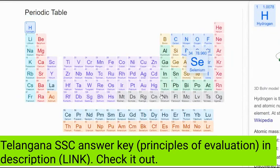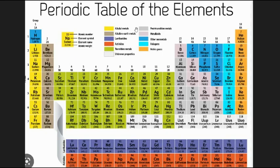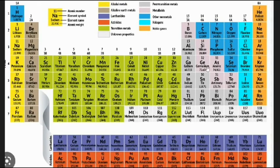This is the modern periodic table. One has to be familiar with this. The modern periodic table is divided into four blocks: S, P, D, and F block elements. We have seven periods and 18 groups. The vertical columns are called groups and horizontal rows are called periods.